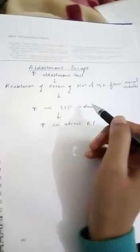Today we will study the aldosterone escape phenomenon. In aldosterone escape phenomenon, there is an increase in aldosterone level in our body, then there is reabsorption of excess sodium and water from the renal tubules.